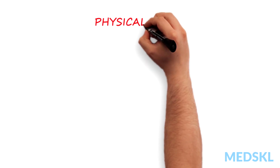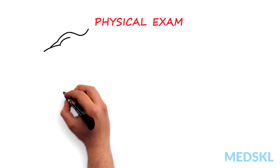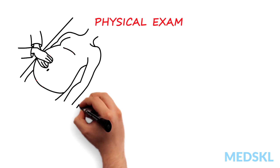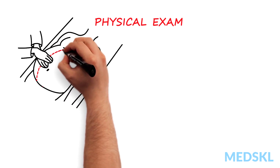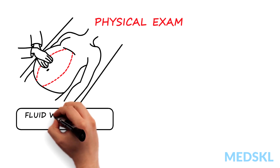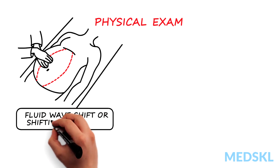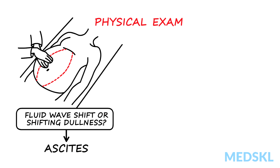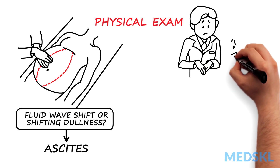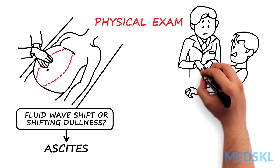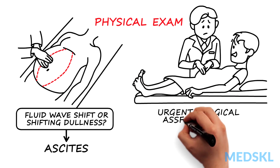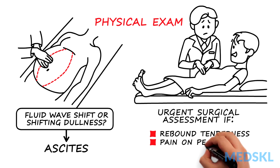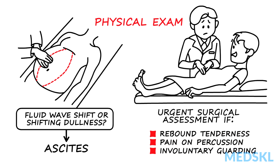An appropriate physical exam is then performed, paying attention to the level of distress of your patient. Direct your attention to identifying a fluid wave shift or shifting dullness, which would indicate the presence of ascites. Look for peritoneal signs, which would direct you to obtain an urgent surgical assessment, such as rebound tenderness, pain on percussion, and involuntary guarding.